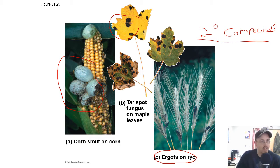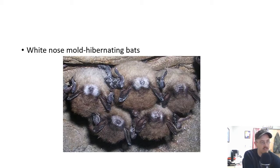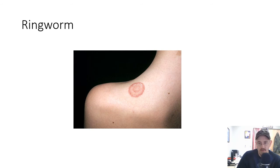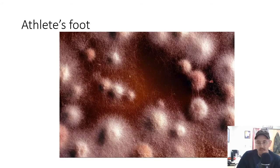Some of these secondary compounds mess with our brains when we eat them, which is why magic mushrooms exist. A real big problem, especially where people go caving and spelunking and bring fungal spores with them without realizing it, is white nose mold, which gets on the noses of bats. It probably itches and hurts, keeps them from hibernating, and eventually kills them. A lot of bat species are heavily threatened by this. Ringworm on humans is not a worm — it's a fungal infection. Sometimes fungi are hard to treat because they are eukaryotes just like us, so drugs to treat them can be powerful and might affect you as well.